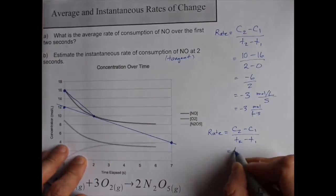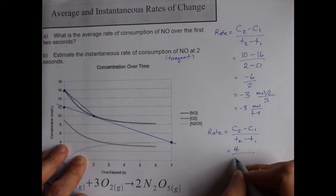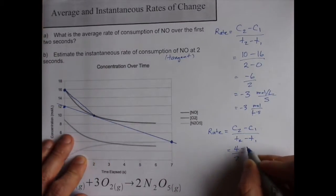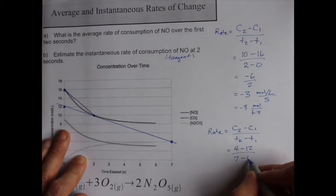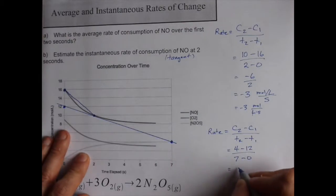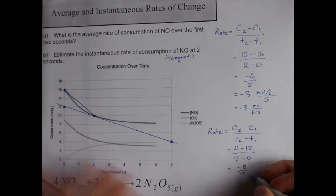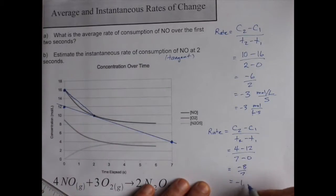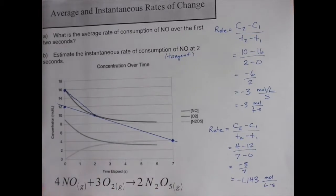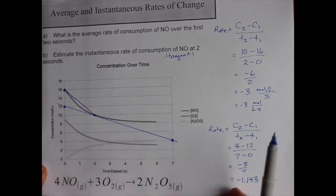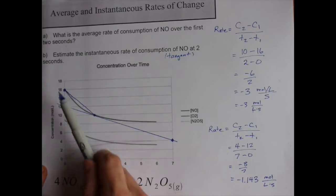So here I have 4 moles per liter at 7 seconds and 12 moles per liter at 0 seconds. That gives me negative 8 over 7. That's negative 1.143 approximately moles per liter per second. Now you'll notice the actual rate of consumption at 2 seconds is less than the average from 0 to 2.